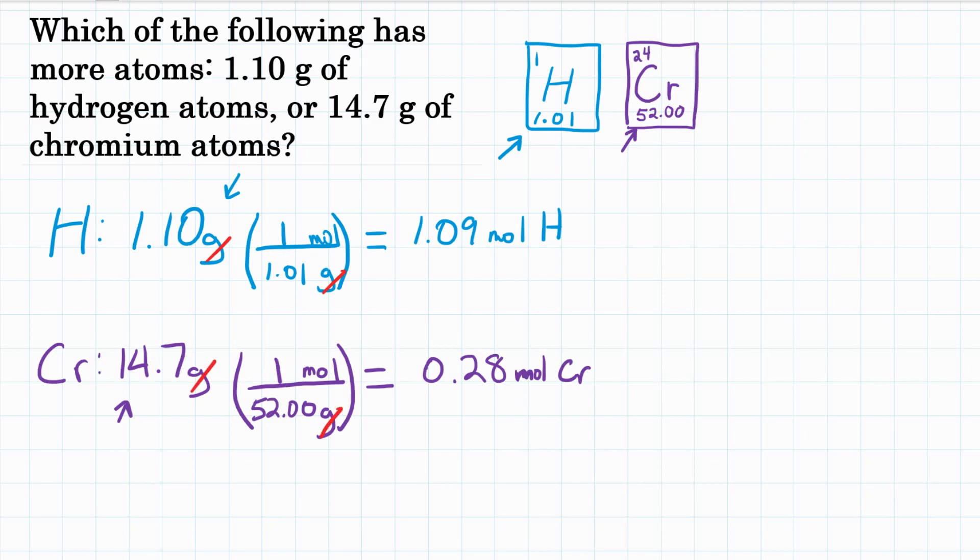So doing the math, we can see that we have more moles of hydrogen than of chromium, even though we have less mass. And that's because hydrogen weighs less. So you don't need as much of it to have as many particles.